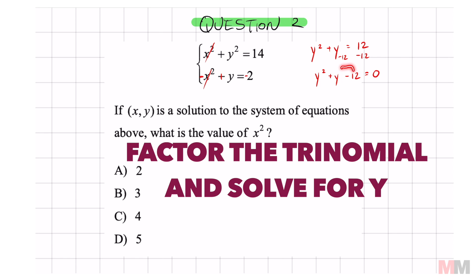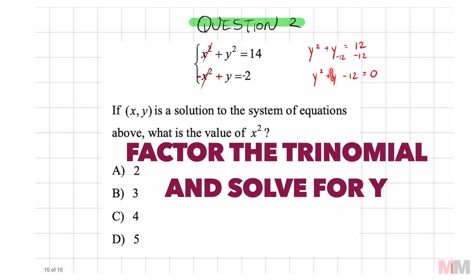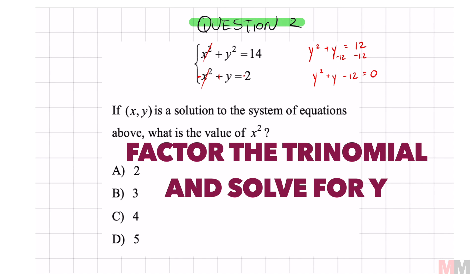And that one's not that bad to factor. Think of two numbers that multiply to negative 12 and add up to 1. And if you factor that really quick, y plus 4 and y minus 3 equals 0. So my two answers for y are just the opposites of those numbers. Y equals negative 4. And the opposite of that one is y equals 3. So now I have the values of y and I can easily find x squared. Doesn't really matter which one you pick.